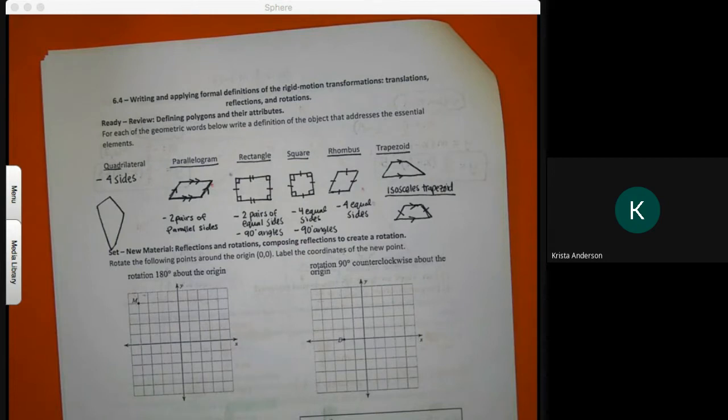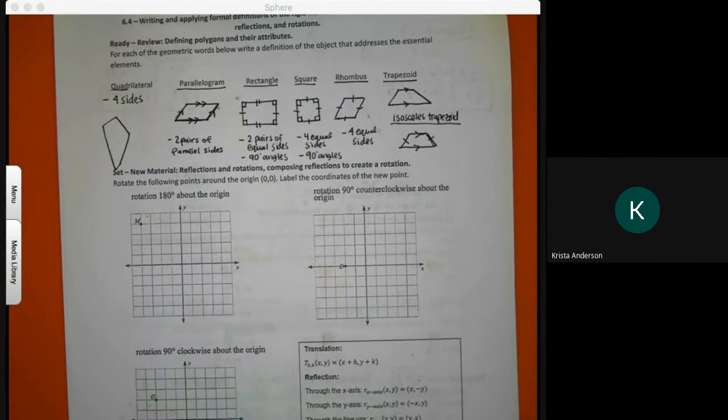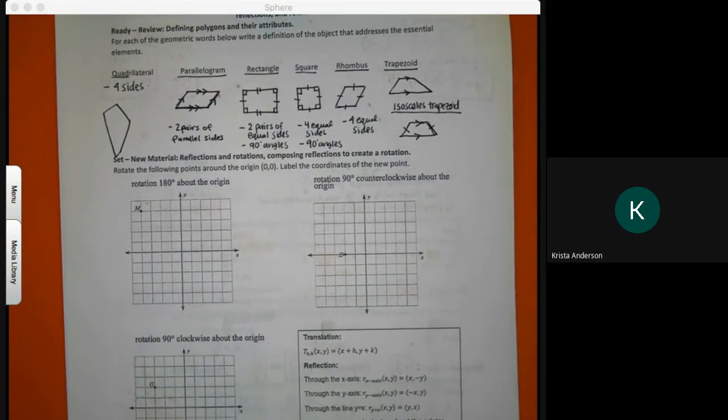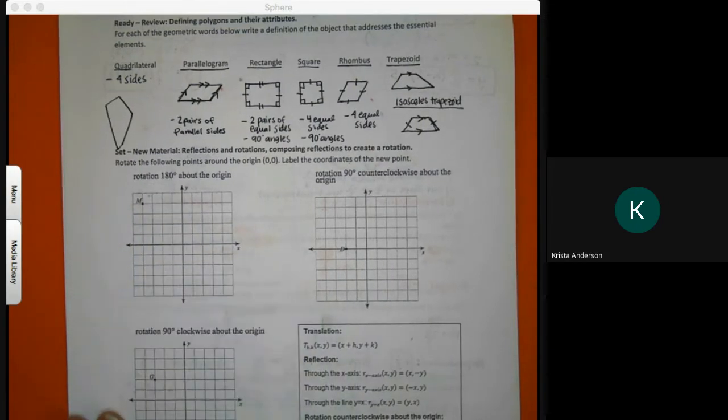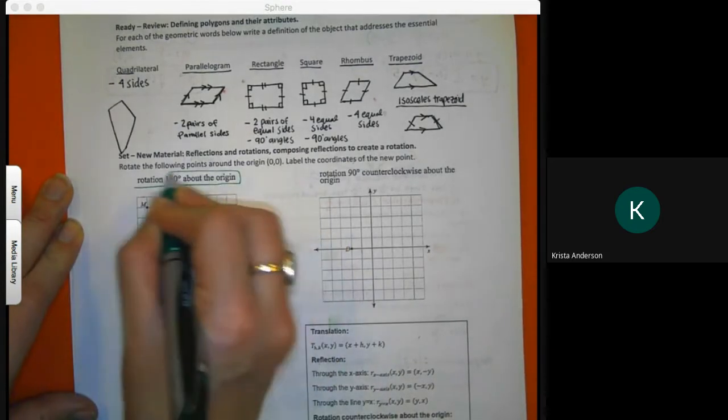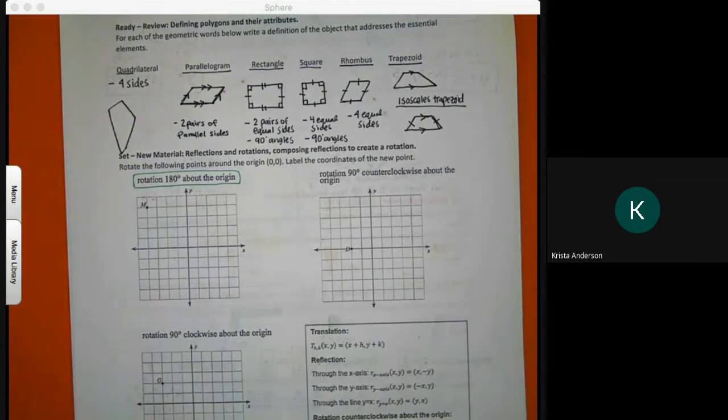Any questions on shapes? When you go to the set section, our new material is not very new. We are going to rotate these points and label the coordinate. So mine says to rotate 180 degrees around the origin.